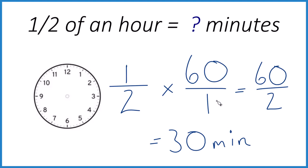So one half of an hour is 30 minutes, and you probably could have figured that out. 60 minutes, take half of it, it's 30.